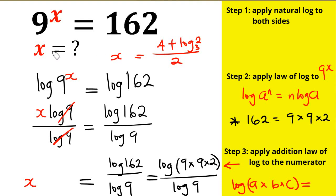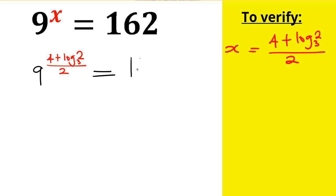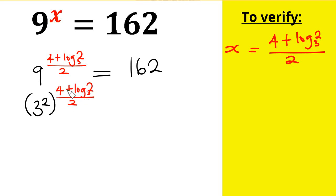We might need to verify if this value of x is actually correct. To do that, we insert this value of x back into the question. We're going to have 9 raised by the power of (4 + log 2 base 3) over 2, and check if this equals 162 — confirming the left-hand side equals the right-hand side. Now, 9 equals 3 raised by the power of 2, so we have (3²) all raised by the power of (4 + log₃2) / 2.